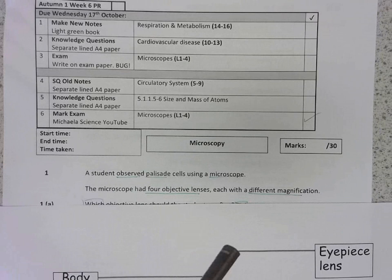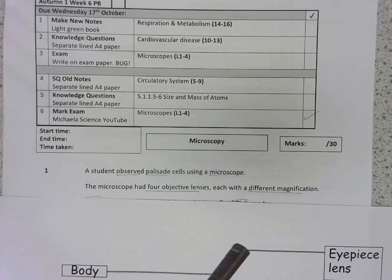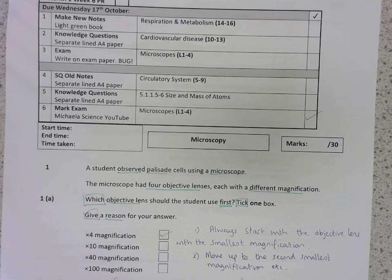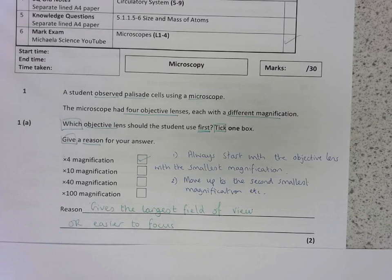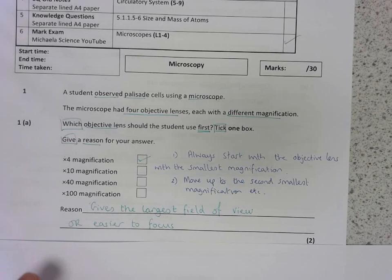Let's move on to question one. A student observed palisade cells using a microscope. The microscope had four objective lenses each with a different magnification. Which objective lens should the student use first, tick one box? Well, they should use the four times magnification because the rule is we always start with the smallest one and then move up from there. The reason is it gives the largest field of view. In other words, you can see as much of the specimen as possible and it makes it easier to focus. Either one of those will give you the mark.